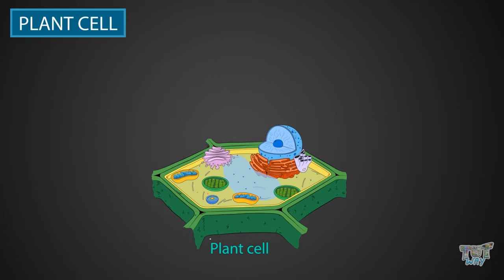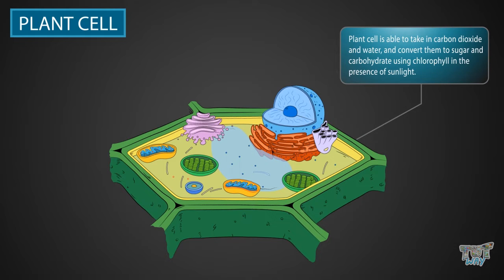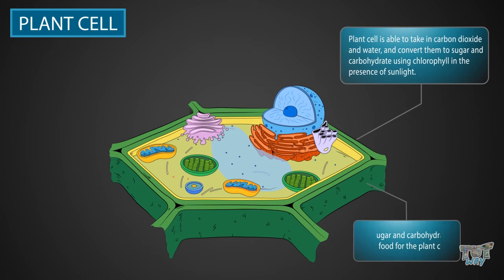Today, we will be learning about this plant cell in detail. The plant cell is a unique eukaryotic cell because only plant cells can manufacture their own food. The plant cell is able to take in carbon dioxide and water, and convert them into sugar and carbohydrates, using chlorophyll in the presence of sunlight. Sugar and carbohydrates act as food for the plant cell, which is prepared by the plant cell itself.